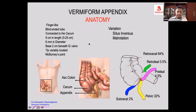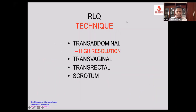The appendix can vary from 5 to 25 centimeters in length, and the width is 6 millimeters. The base of the appendix is about 2 centimeters from the cecum. This defines the technique to be followed for pain in the right lower quadrant.